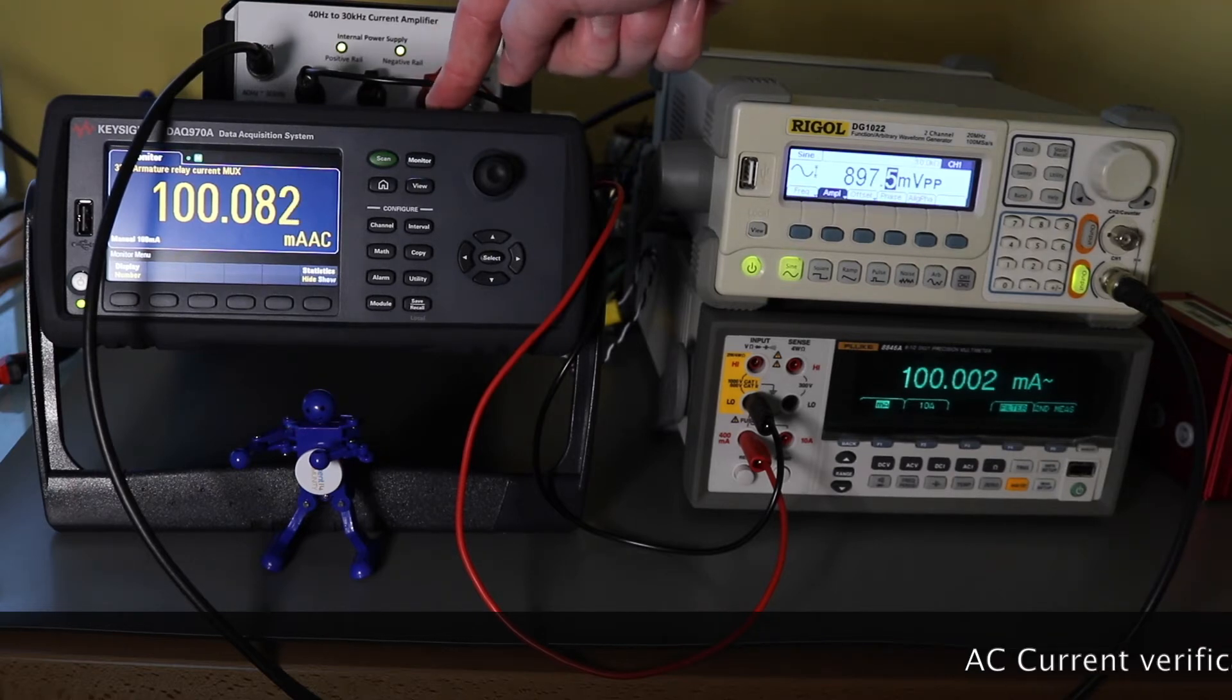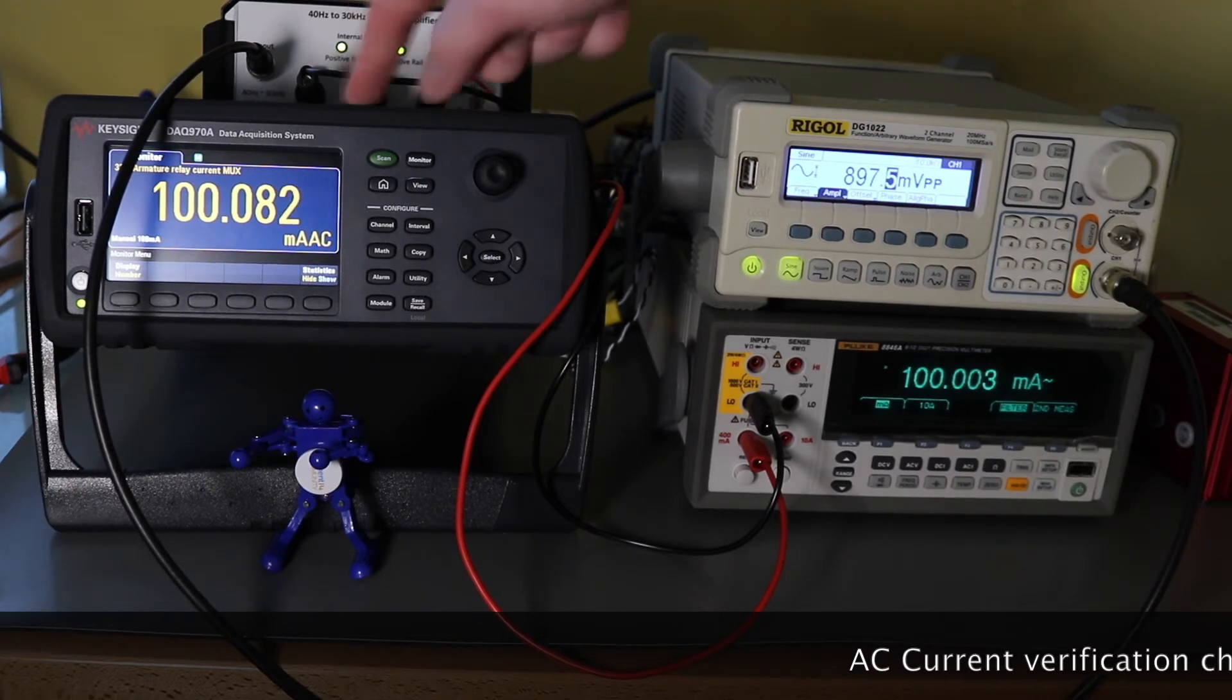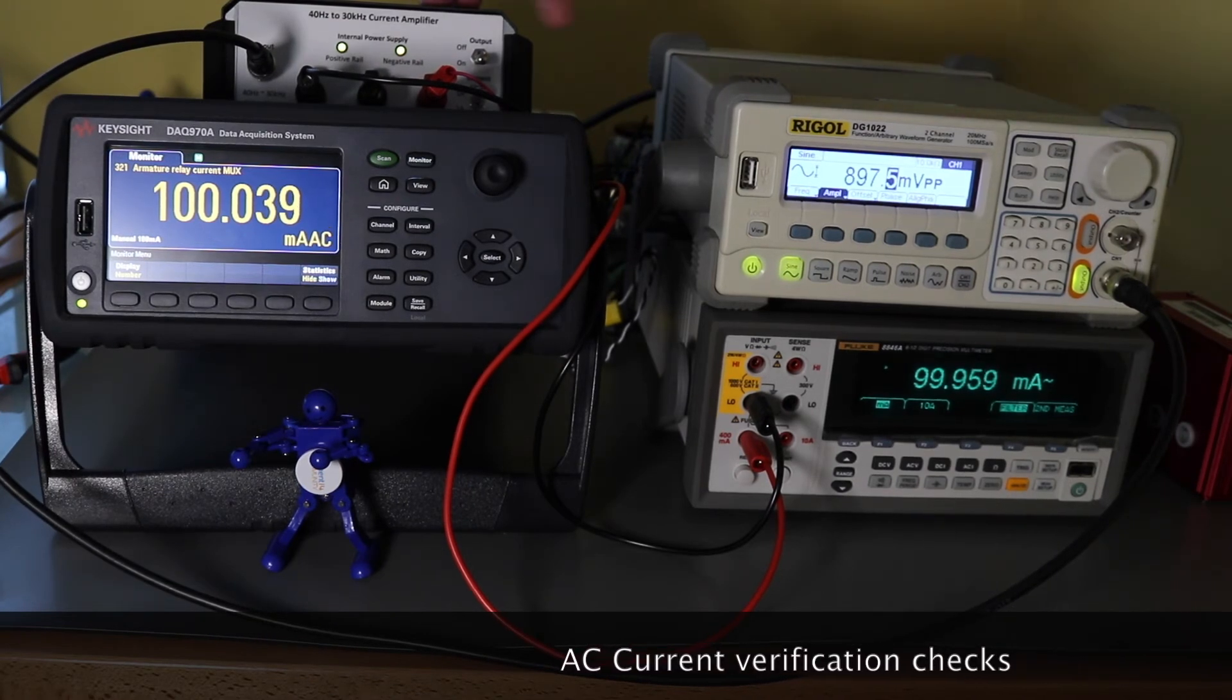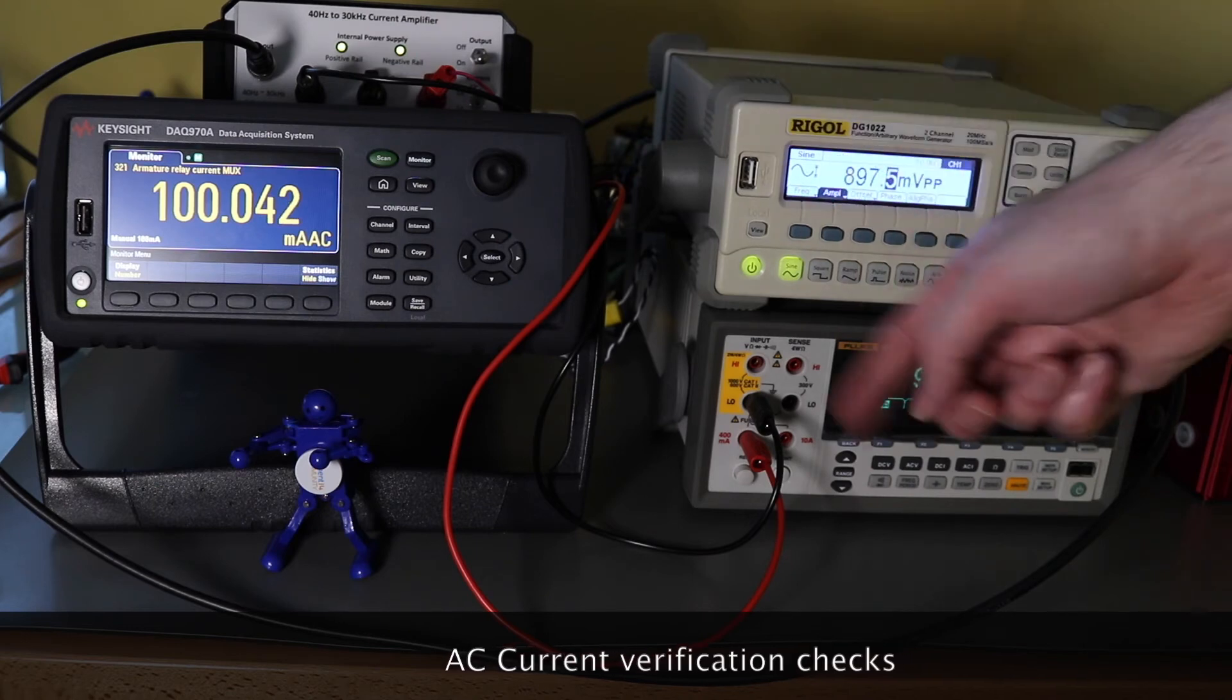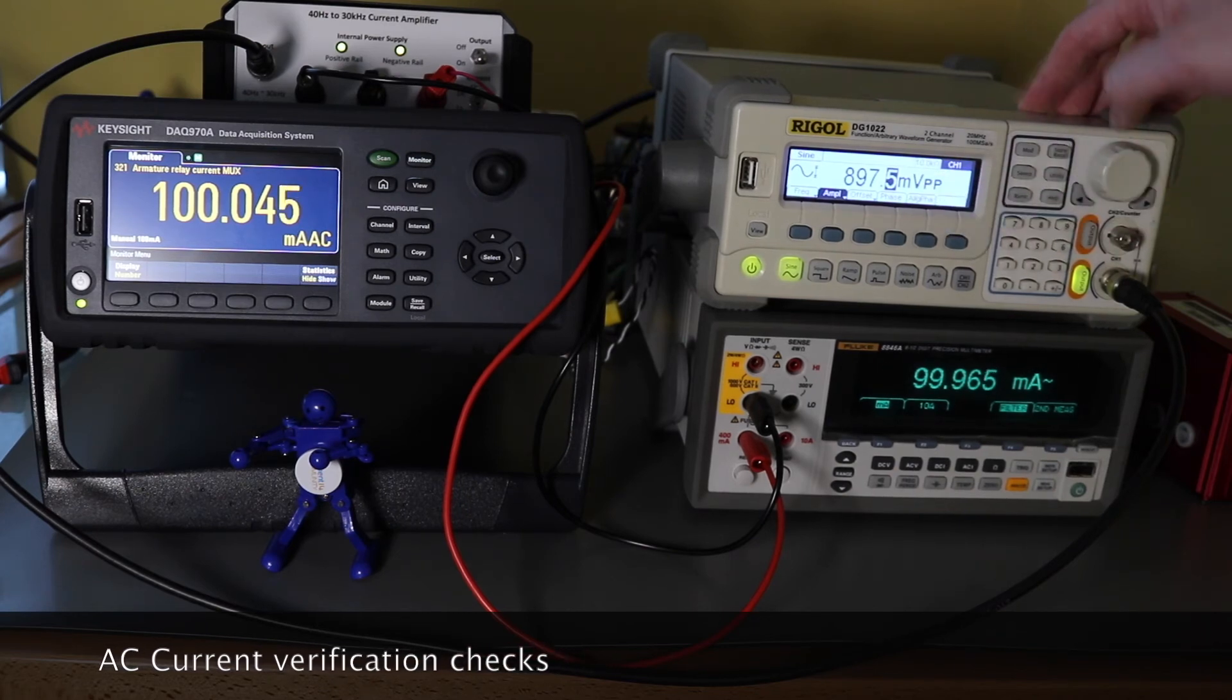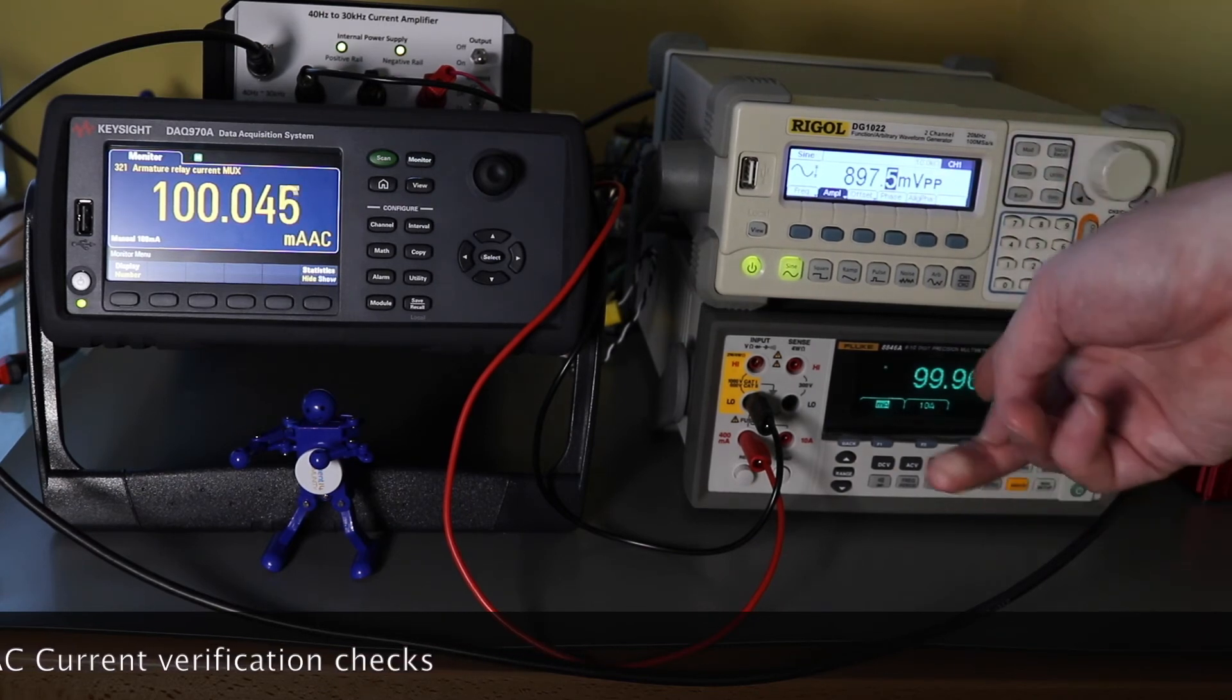Set up for measuring the currents, he's now on channel 321 or channel 21. I've got the waveform generator now feeding to a current amplifier which is feeding both of the Fluke and the DAC in series.